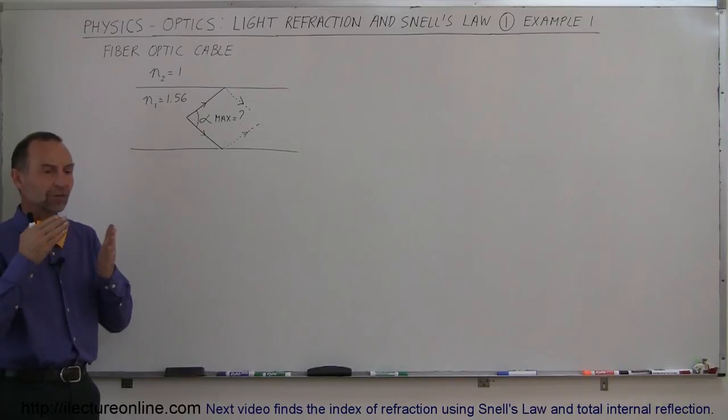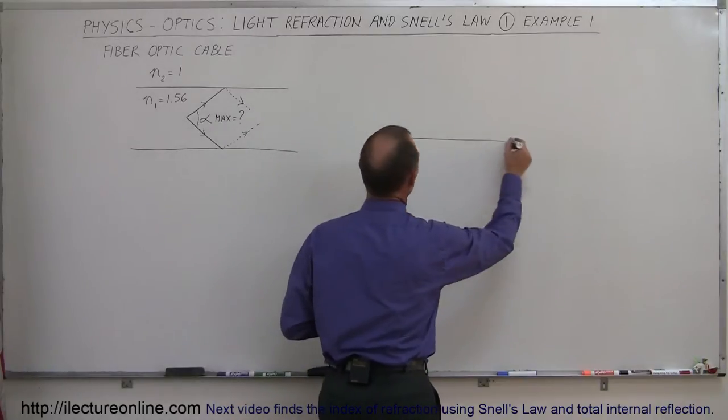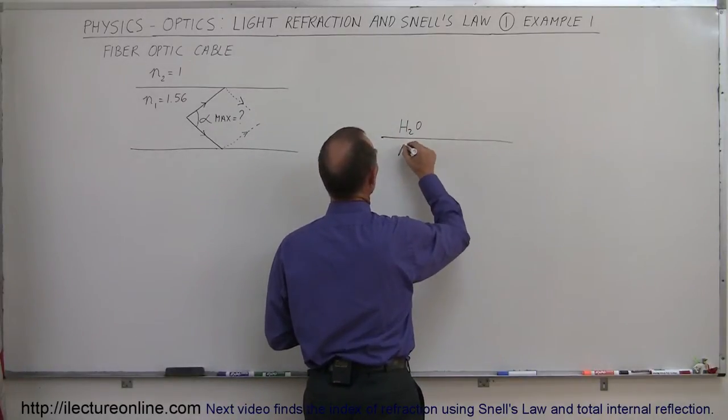Whenever light crosses a boundary, it tends to bend or change direction. So, for example, if there's a boundary between, let's say, air and water,